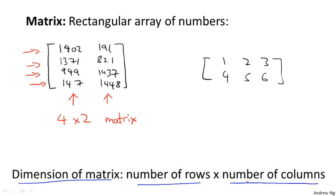And so this example on the left, I'm going to say this is a four by two matrix, because it's number of rows by number of columns. So four rows, two columns. This one on the right, this matrix has two rows. So that's the first row, that's the second row.